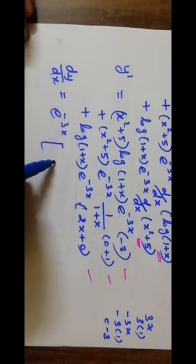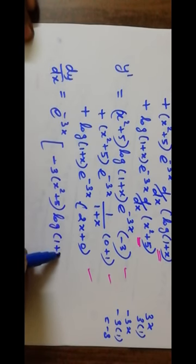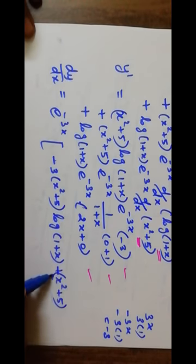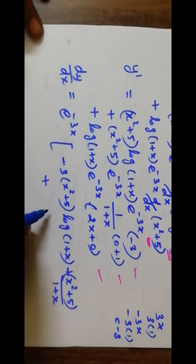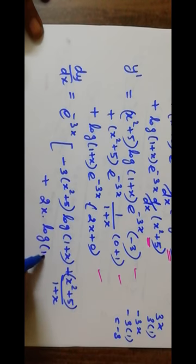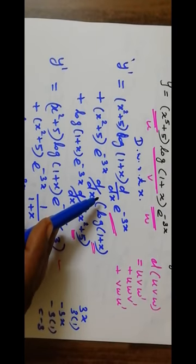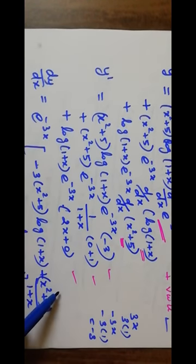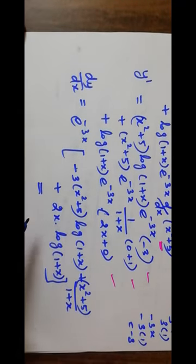Then last one plus 2x log of 1 plus x. So the answer is complete. In the formula, any one you are differentiating and keep the other two as it is. So this answer is the correct one.